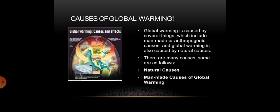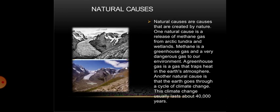Global warming is caused by several things, which include manmade or anthropogenic causes, and it is also caused by natural causes. Some are as follows: natural causes and manmade causes of global warming. First we will discuss natural causes — causes that are created by nature.